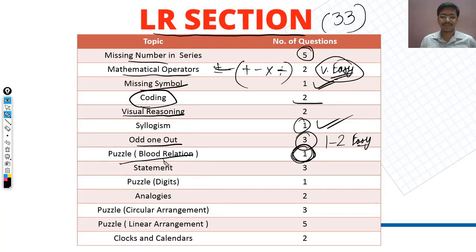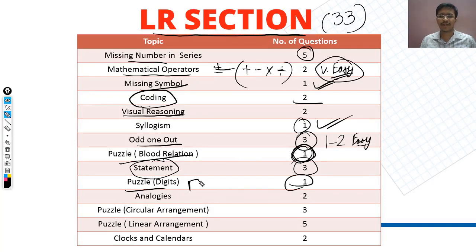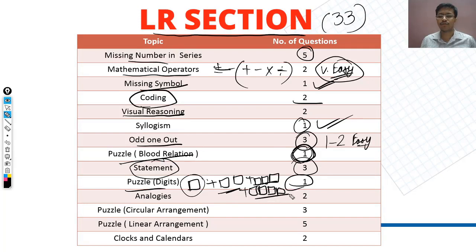Puzzle and blood relation — blood relation was a big single question; if you got it you should attempt it last. Statement-based had 3 questions where you had to evaluate a conclusion from a given statement. There was also a puzzle with 4 numbers arranged in boxes — single digit, two digit, three digit, four digit — and you had to maximize the sum by assigning numbers to each box.